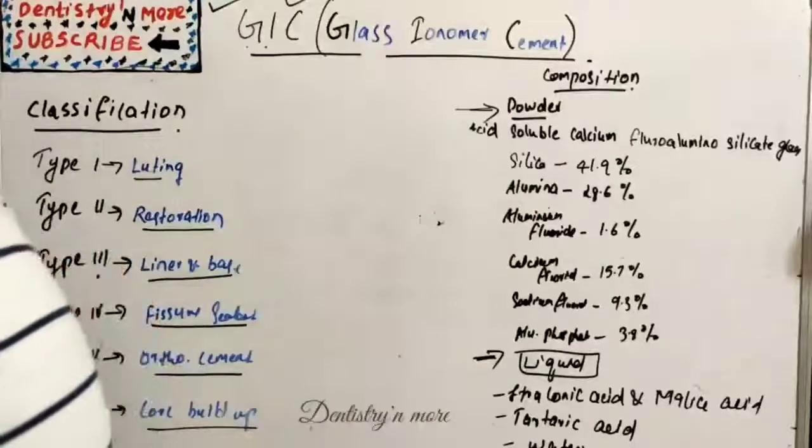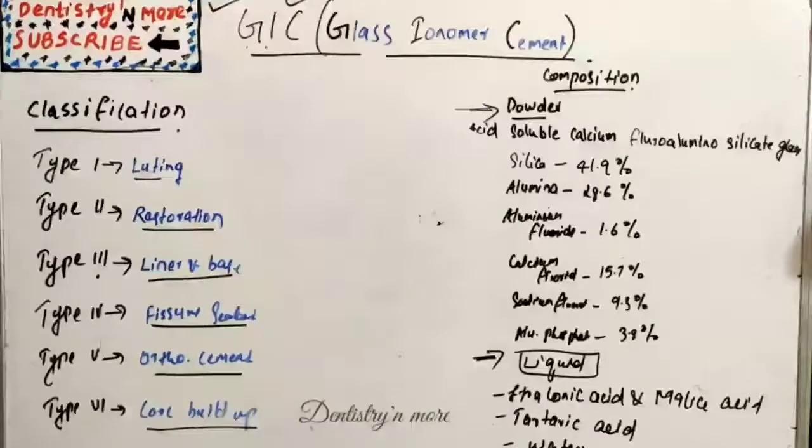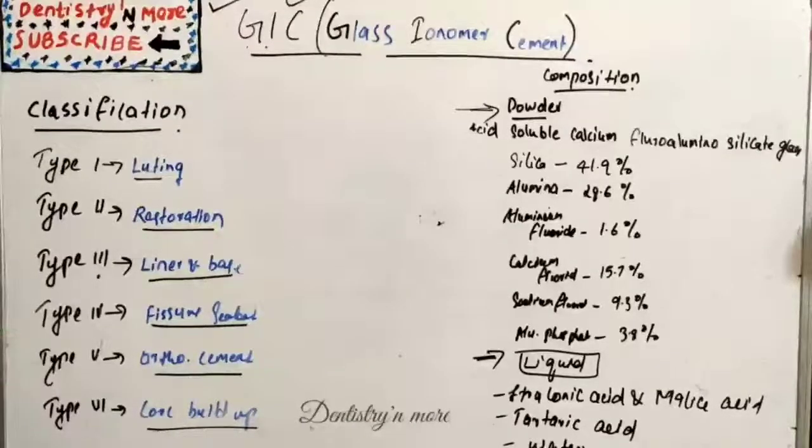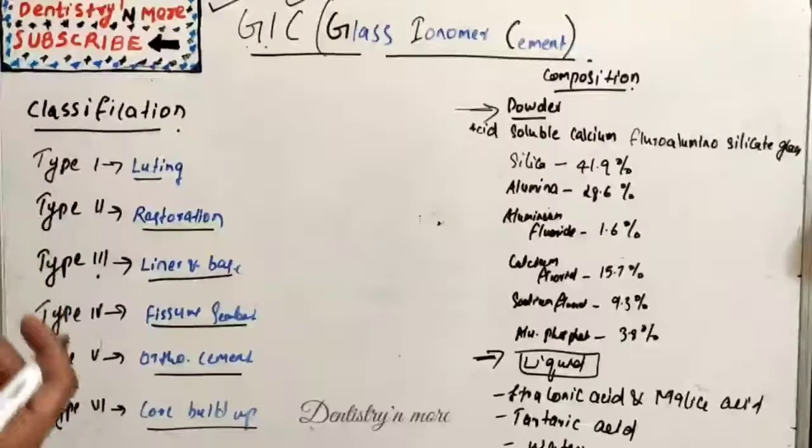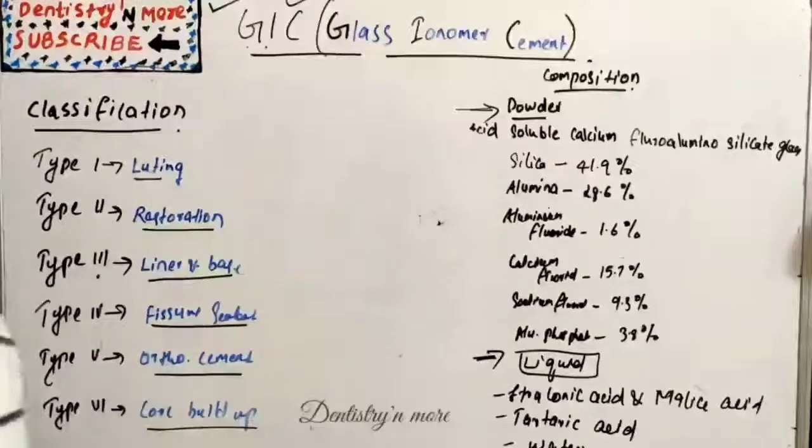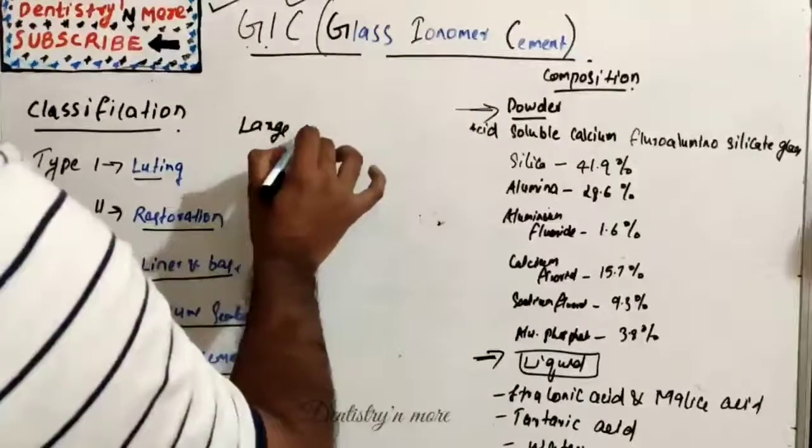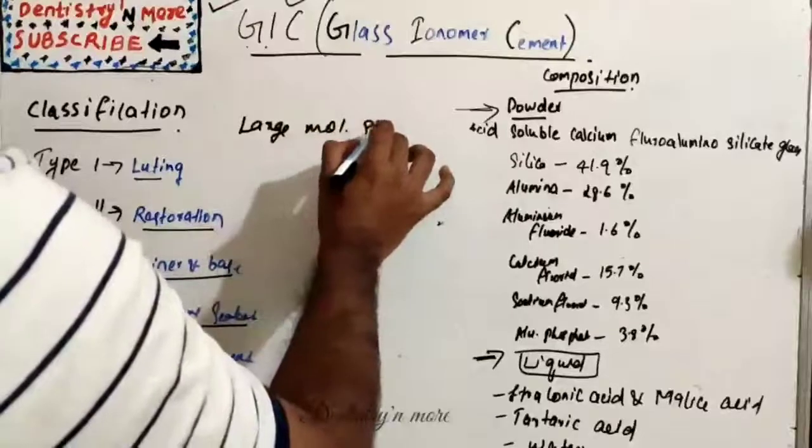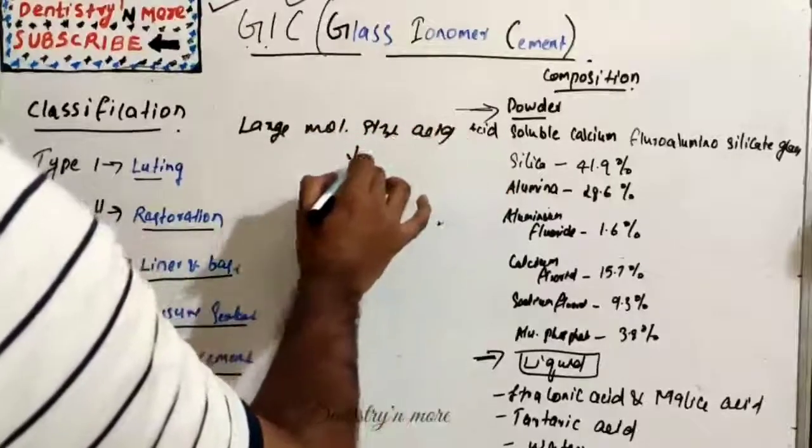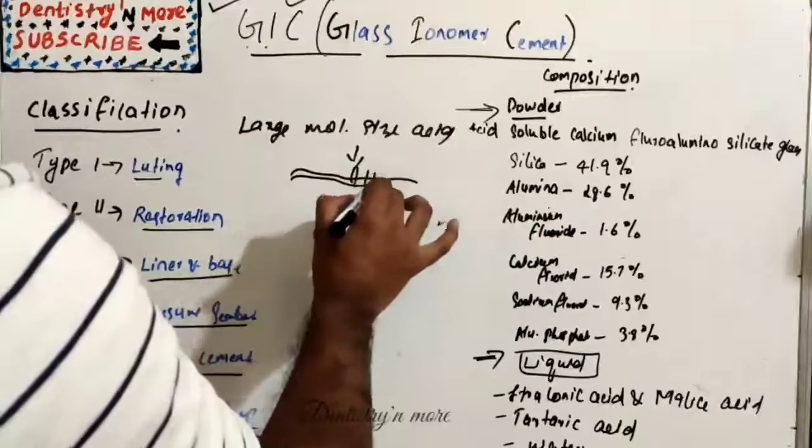Regarding biocompatibility: good biocompatibility. The pulpal response to GIC cement is favorable and it is mild, basically due to the high buffering capacity of hydroxyapatite and large molecular weight of polyacrylic acid which prevents entry into dentinal tubules. The large molecular size of acid means it cannot penetrate the dentinal tubules.